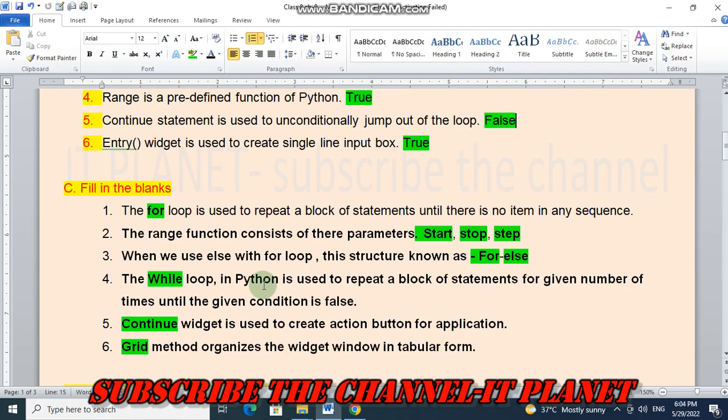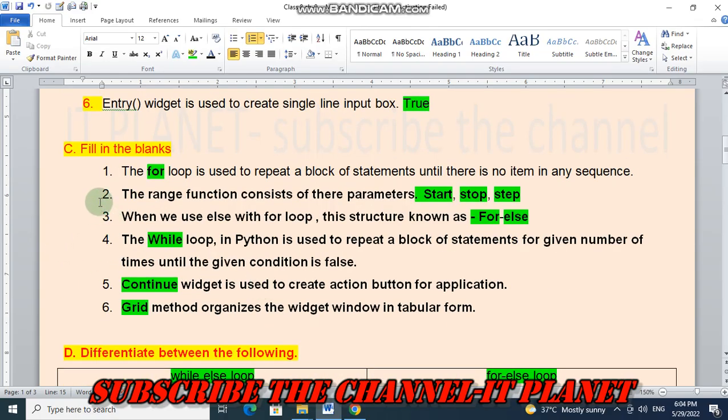Let's see fill in the blanks. First question: The for loop is used to repeat a block of statements until there is no item in any sequence. The range function consists of three parameters: start, stop, and step.